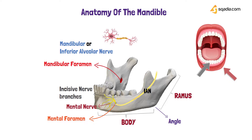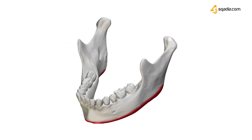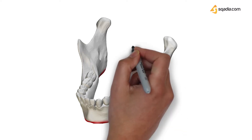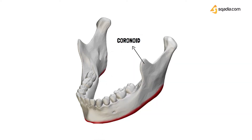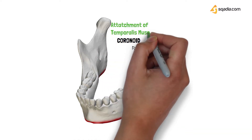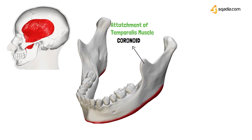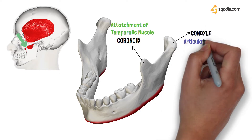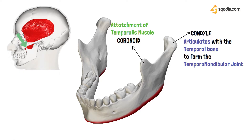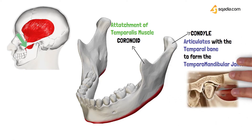Looking at the mandible from another angle, here is the coronoid process, which gives attachment to the temporalis muscle. One end of the temporalis muscle is attached to the neck of the coronoid. Then we have the condyle, which articulates with the temporal bone to form the temporomandibular joint. There is a disc between the temporal bone and the condyle forming this joint.